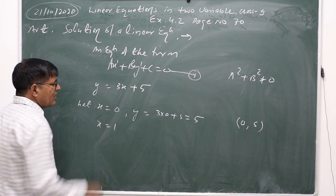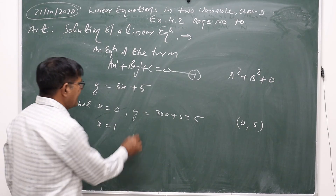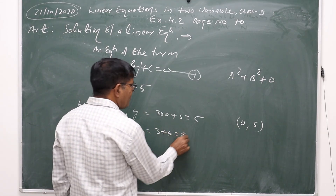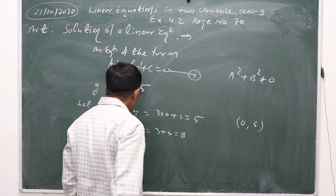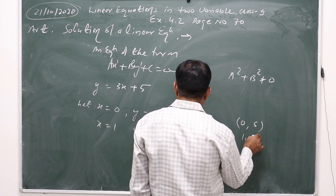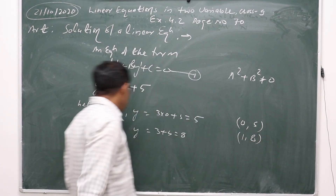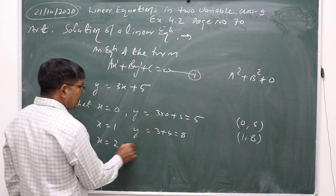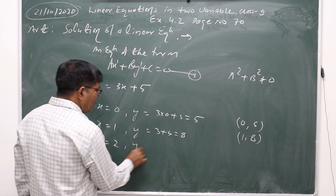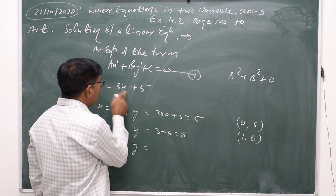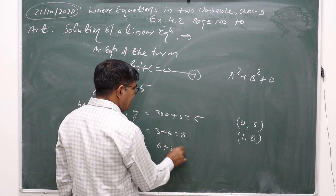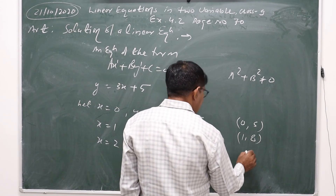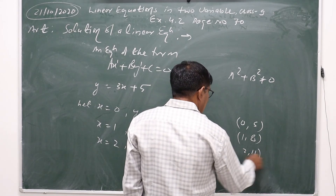Similarly, let x equal 1. Then y will equal 3 plus 5, that is 8. So the new solution set is (1, 8). Similarly, when x equals 2, then y will equal 3 times 2 plus 5, that is 11. So the new solution set is (2, 11).